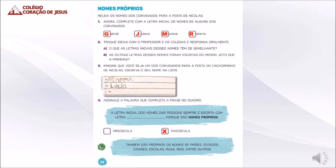Atividade de número 4. Assinale a palavra que completa a frase no quadro. A letra inicial dos nomes das pessoas sempre é escrita com letra porque são nomes próprios. São escritos com letras minúsculas ou maiúsculas? Então, marca o X no quadradinho onde está escrito maiúscula. Porque a frase correta fica: a letra inicial dos nomes das pessoas sempre é escrita com letra maiúscula porque são nomes próprios.